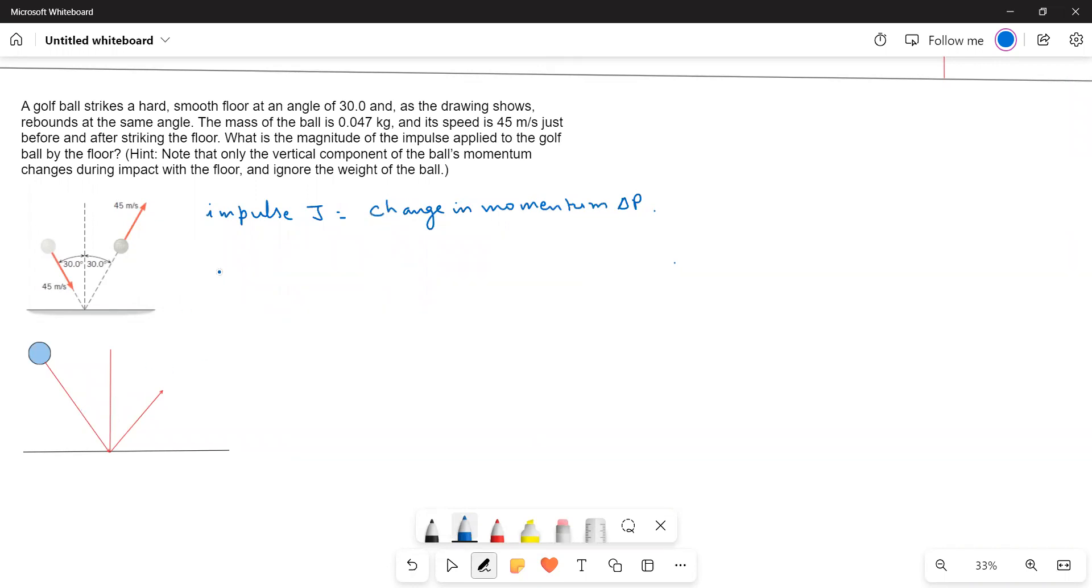Here, the mass of the object is 0.047 kilograms, velocity is 45 meters per second, and it is striking at an angle of 30 degrees. So this is the 30 degrees angle, and then it is striking again with 30 degrees going up. This is the initial direction, this is the final direction.